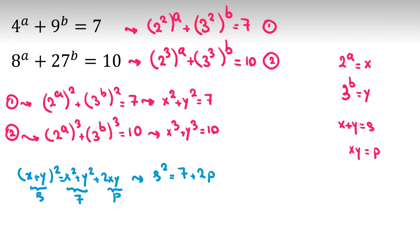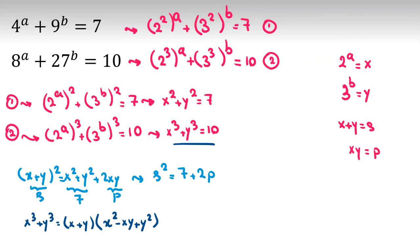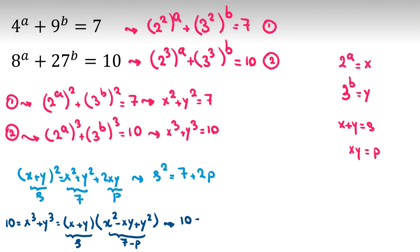Next step, we consider x cubed plus y cubed. We have the famous identity: x cubed plus y cubed equals x plus y times x squared minus xy plus y squared. So x cubed plus y cubed is 10, x plus y is s, and x squared plus y squared is 7, minus xy which is p. So 10 equals s times 7 minus p.